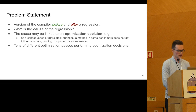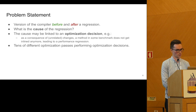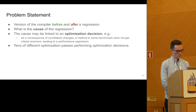We have some version of the compiler before and after the regression, and we want to answer what is the cause of the regression. The cause is often linked to an optimization decision — for example, the compiler used to inline a particular method in some workload before the regression, and after that regression it stopped inlining that particular method. This is the kind of answer that compiler engineers expect to make the heuristics in the compiler more robust to these changes in the profiles.